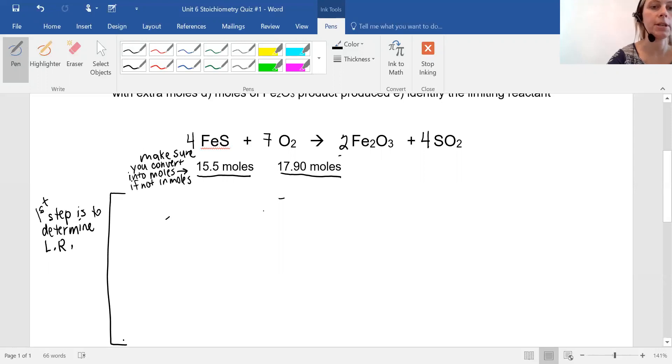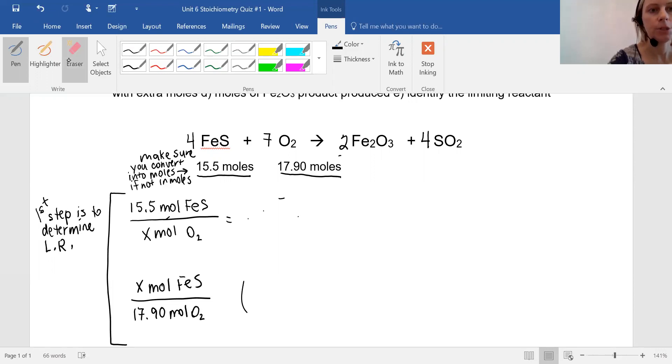So I'm going to set up my proportion and I'm going to use all my units in the proportion. So I've got 15.5 moles of FeS. And I'm trying to figure out how many moles of oxygen. I'm going to set up the other equation. So this one, I'm looking for moles of FeS. And I've been given 17.9 moles of oxygen. Again, you're only doing this step to determine the limiting reactant. So I'll set up the proportion. There we go.